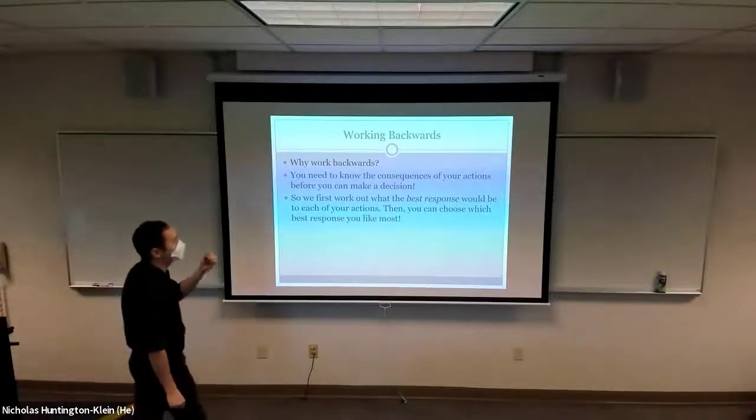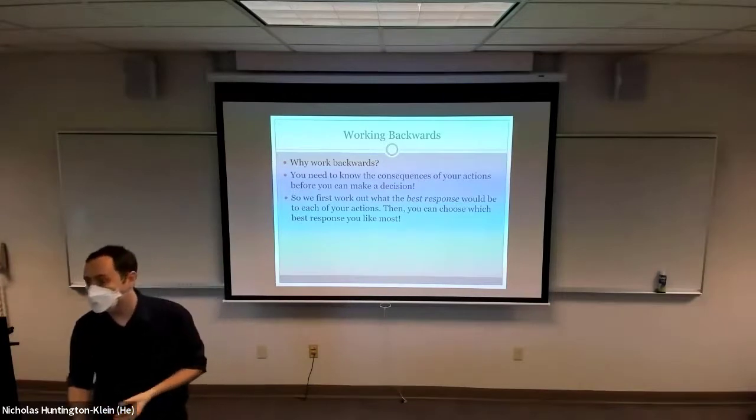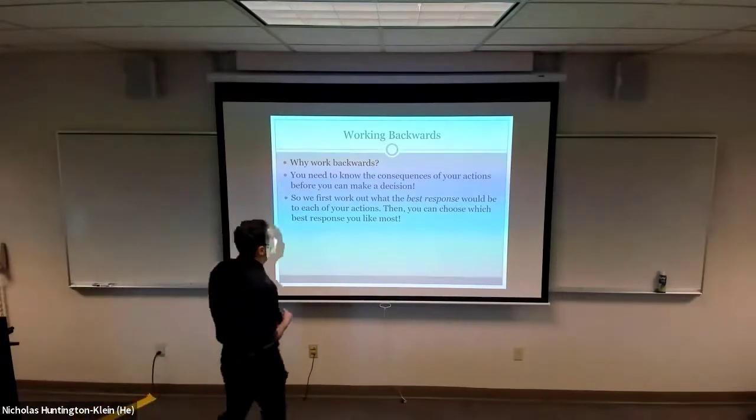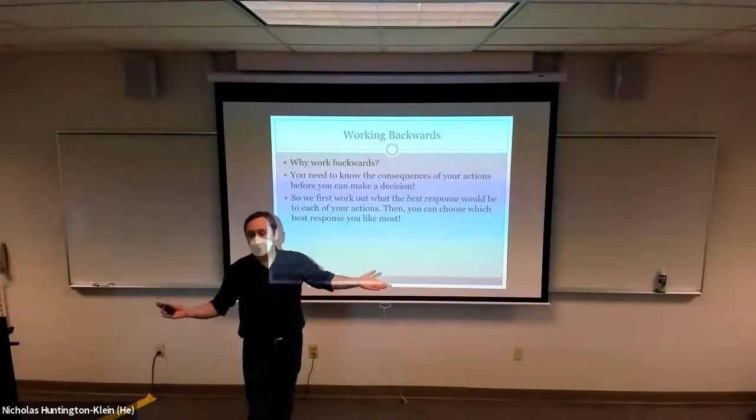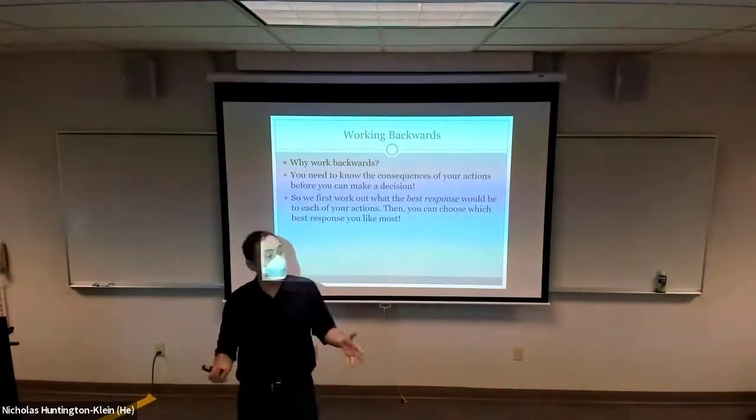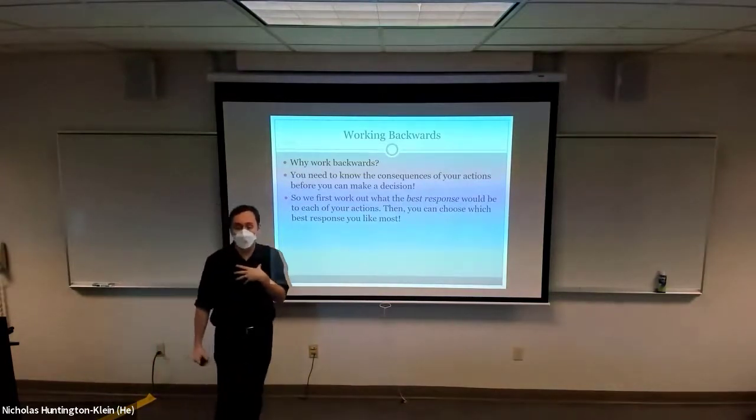So the reason we're working backwards like this is because we have to know the consequences of our actions before we can make any sort of decision, which means we have to figure out if we do any of these different options, they're going to see what we've done, they're going to have a chance to respond. How do we think they're going to respond? Based on that, now I can choose realistically between my options.